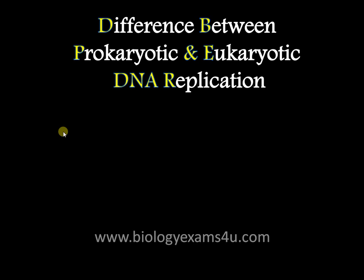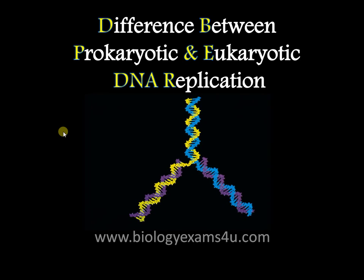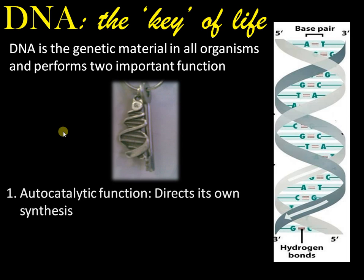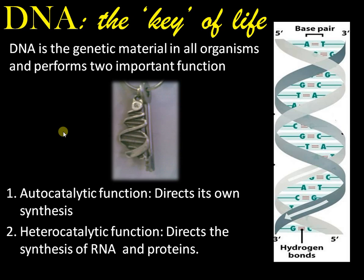In this tutorial we are going to discuss the difference between prokaryotic and eukaryotic DNA replication. DNA is the genetic material in all organisms, from bacteria to blue whale, and it performs two important functions. First is the autocatalytic function, where it directs its own synthesis — making copies of itself. Second is the heterocatalytic function, where it directs the synthesis of RNA and proteins.